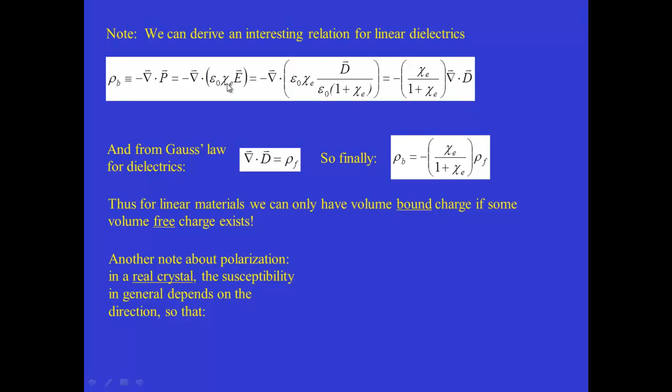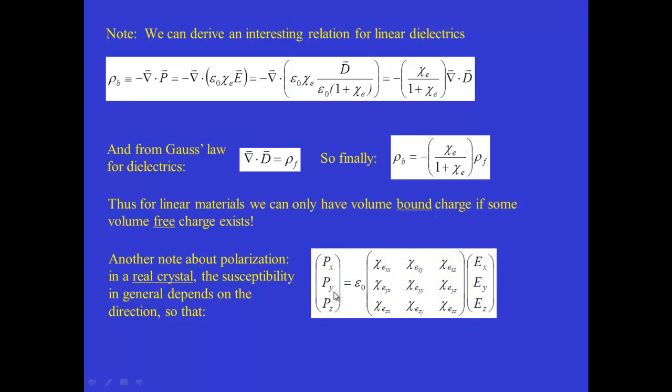It actually assumes it would be a constant that would be the same no matter whether we're talking about the X, the Y, or the Z component of P, the polarization vector. However, in real crystals, the susceptibility in general depends on the direction. In other words, it won't be the same for an applied field along the X direction as it is along the Y direction or the Z direction.